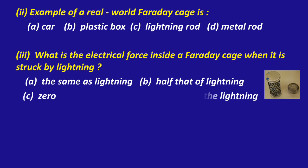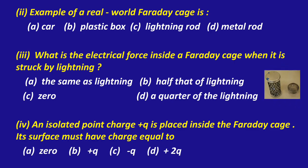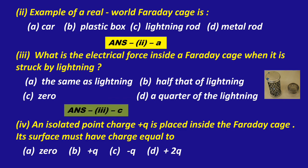Question 2: An example of a real-world Faraday cage is — a car, plastic box, lightning rod, or metal rod. The correct answer is A — car. Question 3: What is the electrical force inside a Faraday cage when it is struck by lightning? Options: same as lightning, half that of lightning, zero, a quarter of the lightning. Correct answer is C — zero. Question 4: An isolated point charge +q is placed inside the Faraday cage. Its surface must have charge equal to — zero, +q, -q, or -q + 2q. The correct answer is B — +q.